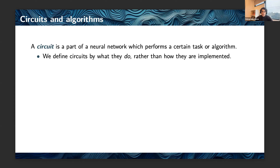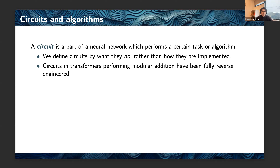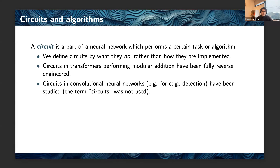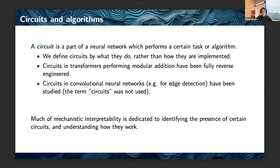A bunch of circuits have been identified in neural networks. There's a paper looking at circuits in transformer models performing modular addition, and these circuits have been fully reverse engineered and understood. We've also got circuits in convolutional neural networks for edge or curve detection — the term 'circuits' wasn't used when those were studied, but it's the same idea. A lot of mechanistic interpretability is dedicated to identifying the presence of certain circuits and understanding how they work.